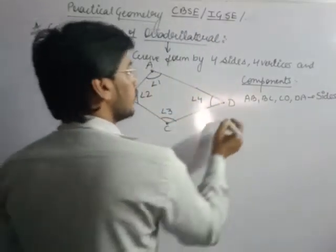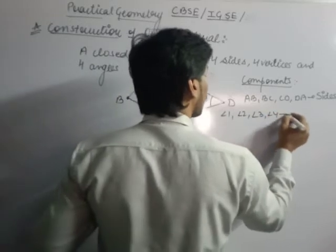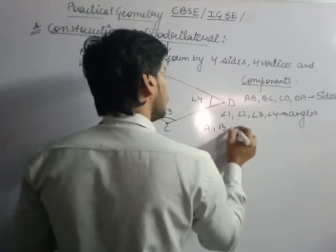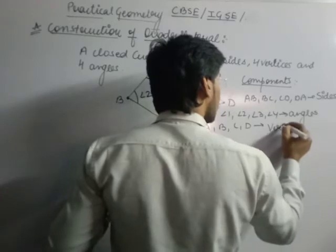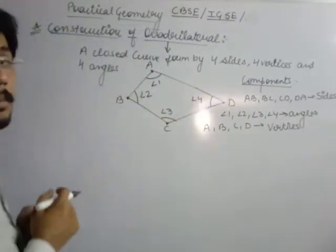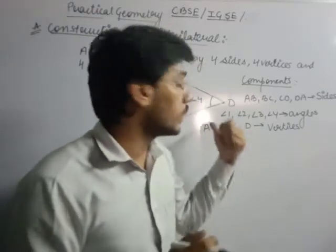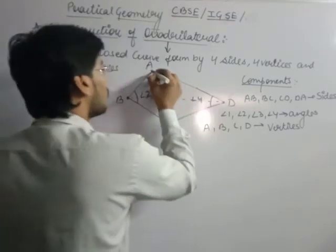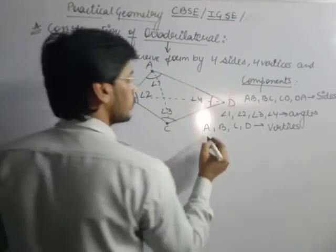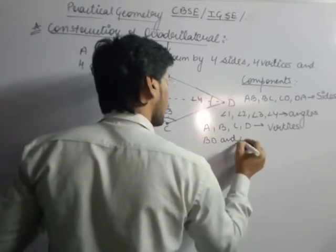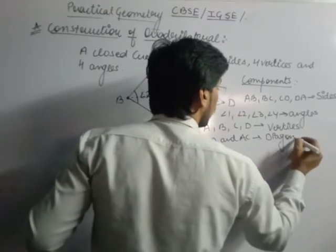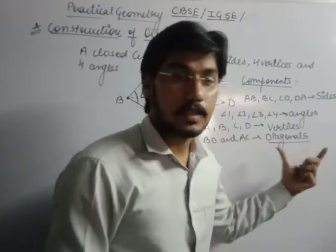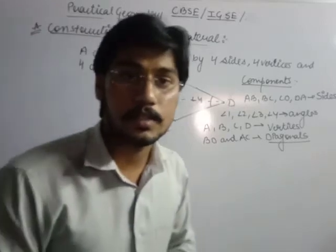Similarly, angle one, angle two, angle three, and angle four are the angles of the quadrilateral. And A, B, C, D are the vertices. There is one more important thing in the quadrilateral — the diagonal. If we join two opposite vertices, then AC and BD are the diagonals of this quadrilateral.